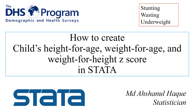Welcome to a new presentation on data analysis in Stata. Today I am going to show how to create height-for-age, weight-for-age, and weight-for-height z-scores — that means HAZ, WAZ, and WHZ. From these indicators we can easily calculate nutritional indicators: stunting, wasting, and underweight. Today I'll discuss how to create these indicators in Stata from DHS data, and as an example dataset we will use the BDHS 2017-18 data.